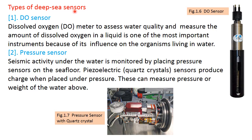Types of deep sea sensors. First is the DO sensor. Figure 1.6 shows the DO sensor. The SCM1 is a sample of a DO sensor practically used in underwater communication. A dissolved oxygen sensor is used to assess water quality and measure the amount of dissolved oxygen in a liquid. It is one of the most important instruments because of its influence on organisms living in water.